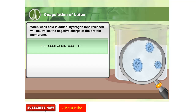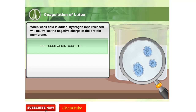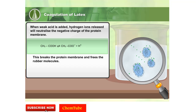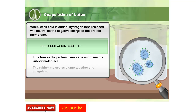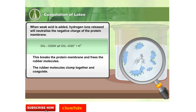The free-moving rubber particles no longer repel each other. Instead, they collide with each other. The collision of the rubber particles results in breakage of the thin protein membrane. The rubber molecules tend to clump together, and therefore latex coagulates.